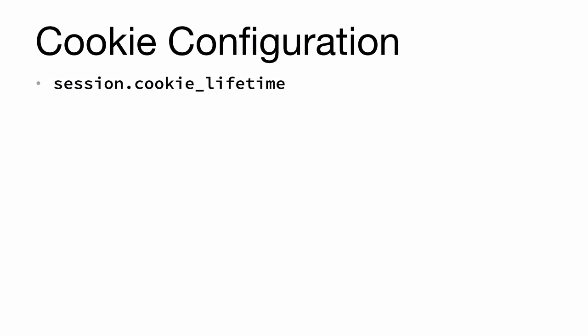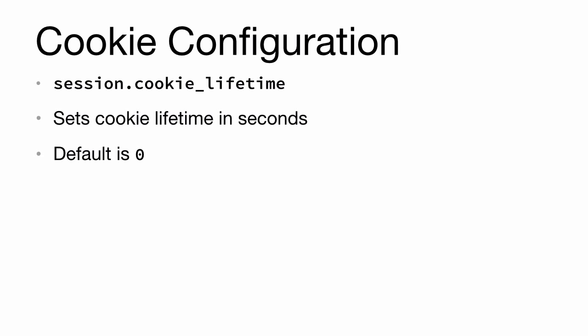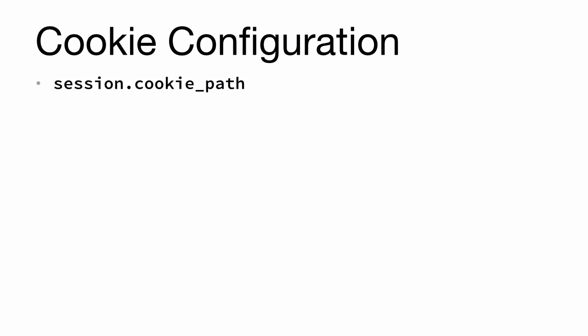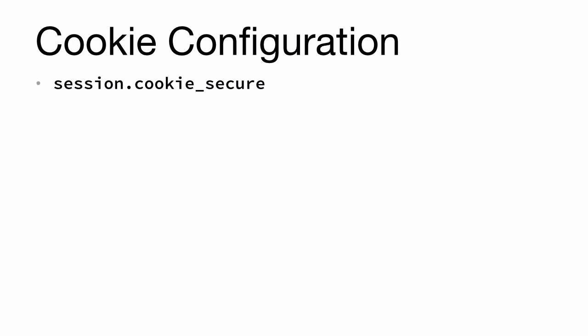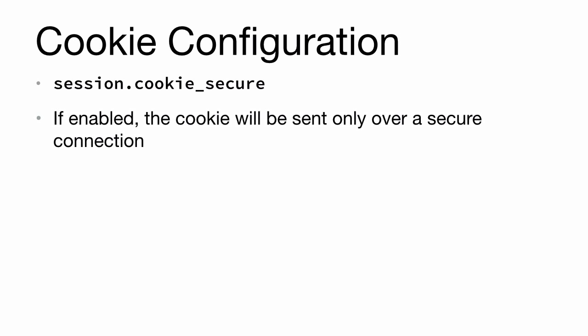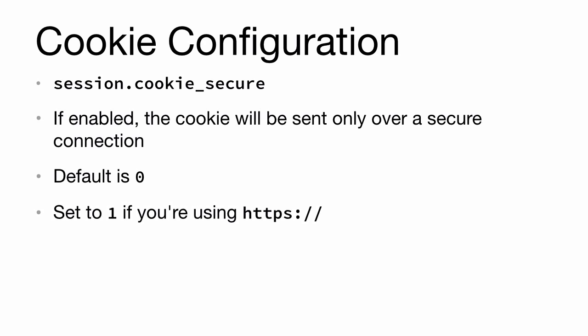Next we have session.cookie_lifetime, which sets the cookie lifetime in seconds. The default is zero. Then we have session.cookie_path, which sets the path on the domain where the cookie is valid. The default slash represents all paths. Next is session.cookie_secure — if enabled, the cookie will only be sent over a secure connection. It is currently disabled by default (equal to zero). Set it to one if you're using HTTPS.